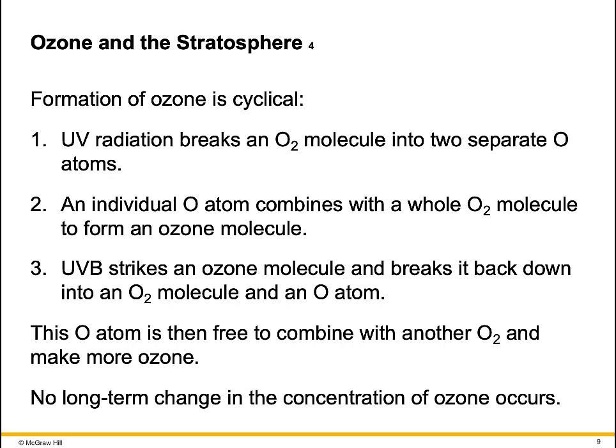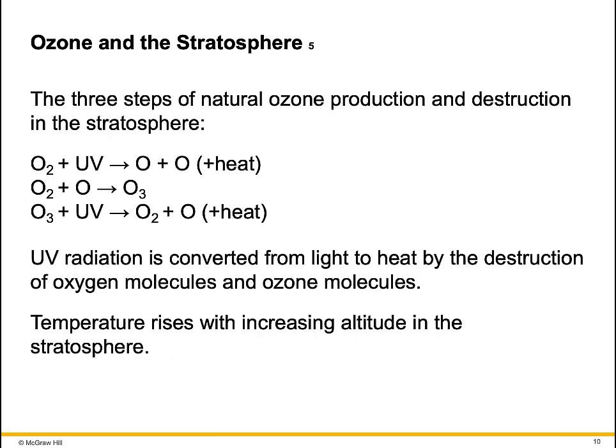The three steps of natural ozone production and destruction in the stratosphere: UV radiation breaks an O2 molecule into two separate oxygen atoms. An individual oxygen atom combines with a whole O2 molecule to form an ozone molecule. UVB strikes an ozone molecule and breaks it back into an O2 molecule and a single oxygen atom. This oxygen atom is then free to combine with another O2 to make more ozone. No long-term change in the concentration of ozone occurs.